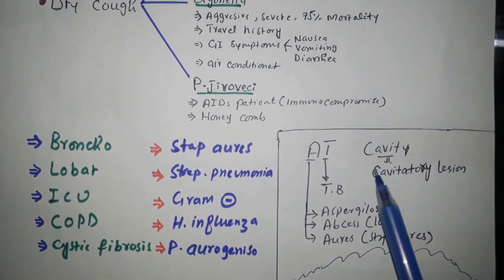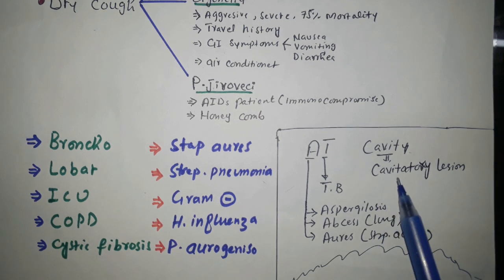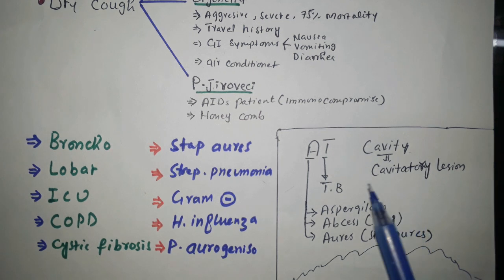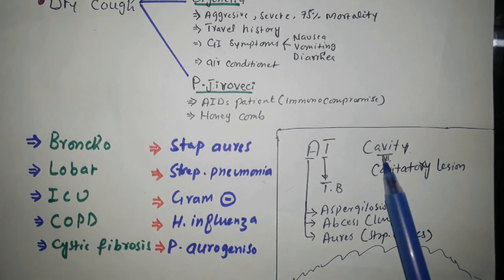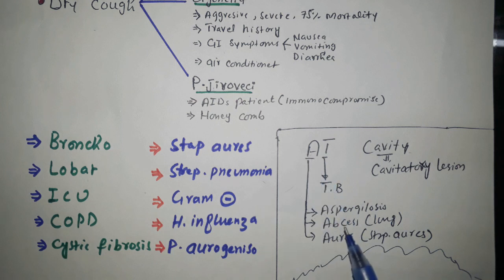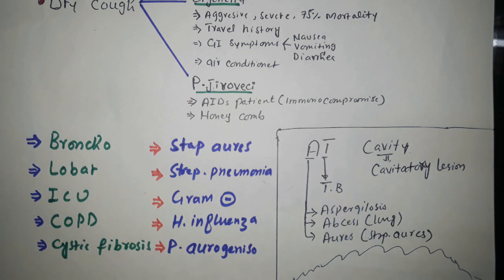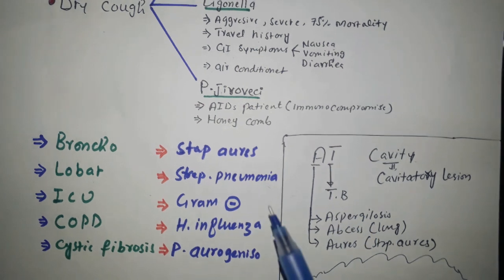Now, you will see cavitary lesions. What are the causes of cavitary lesions? Just remember the mnemonic CAVITY: C is for cavitary lesion, A is for Aspergillosis, A is for Abscess — meaning lung abscess, A is for Aureus — meaning Staphylococcus aureus, and T is for TB.